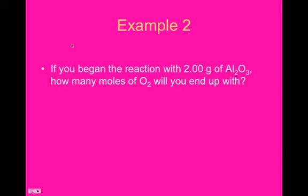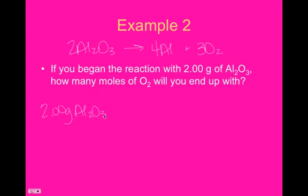So, example again. Remember, we had the reaction of 2Al2O3 decomposes to form 4 aluminums and 3 oxygens. So, if you begin the reaction with 2 grams Al2O3, how many moles of O2 will you end up with? So, we started with 2 grams, so that's what's going to go in our block, our first block, top left. This is what we need to have in our last block, top right, so we need to work our way there.